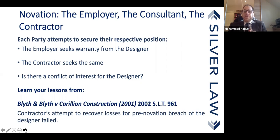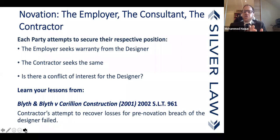Employers normally seek a warranty from the designer which allows them to continue to claim against the designer's PI if the contractor is not available — for the earlier works as well. Since it's novation, they can also take a warranty for the future period to make their position absolutely secure. Similarly, the contractor may seek a warranty for the prospective period of the contract and professional services, and it's not unusual to seek a warranty for the previous period as well.